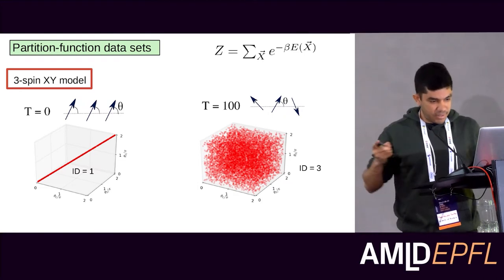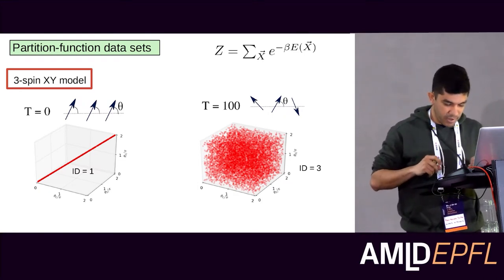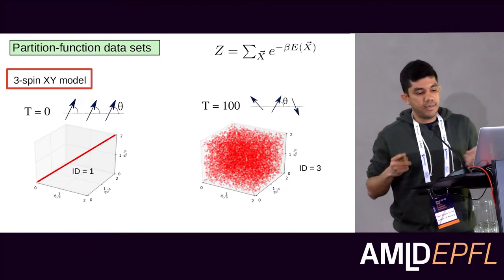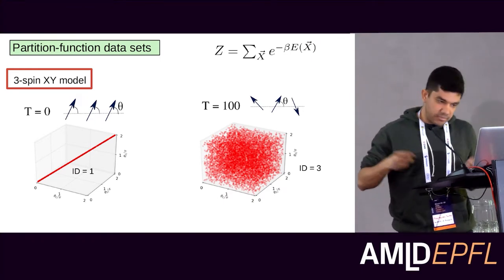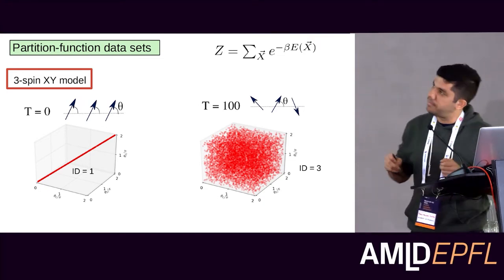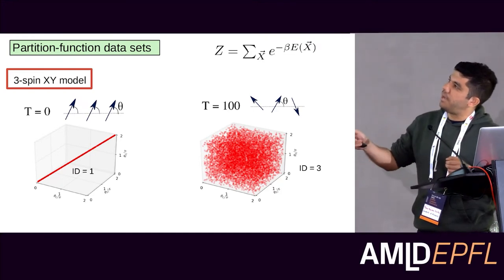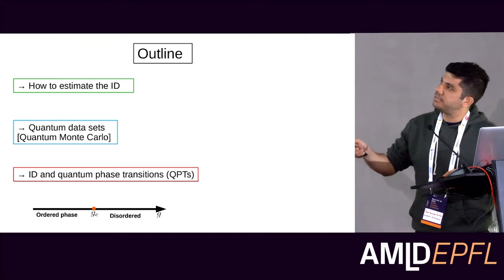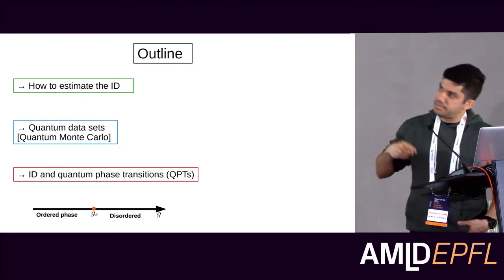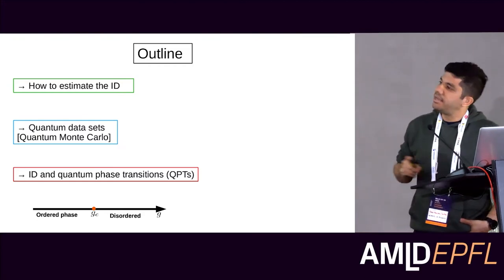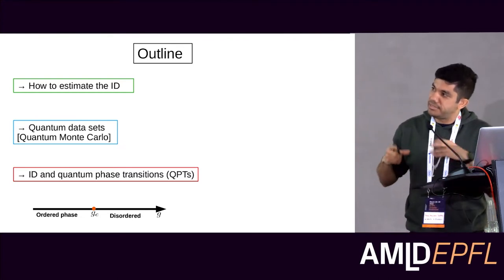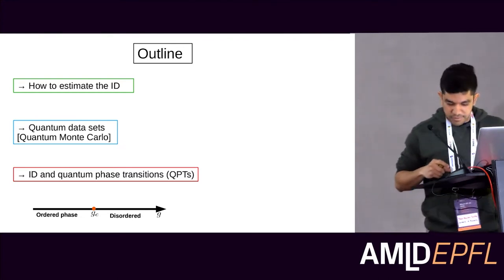Of course, that was a simple three-spin XY model. We want to estimate the intrinsic dimension of many-body physical data sets with a large number of particles. Here is the outline: I'll briefly describe how to estimate the intrinsic dimension, then how to define quantum data sets using quantum Monte Carlo simulations, and finally show results for intrinsic dimension near quantum phase transitions.